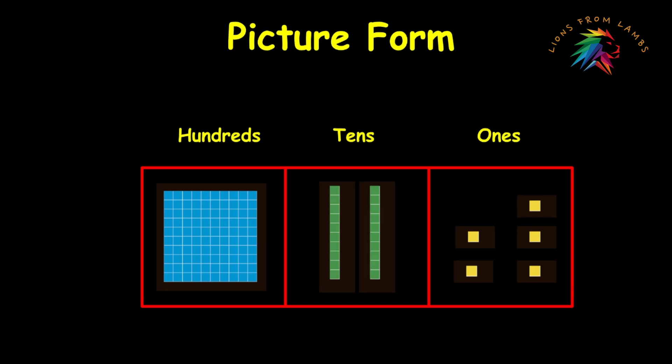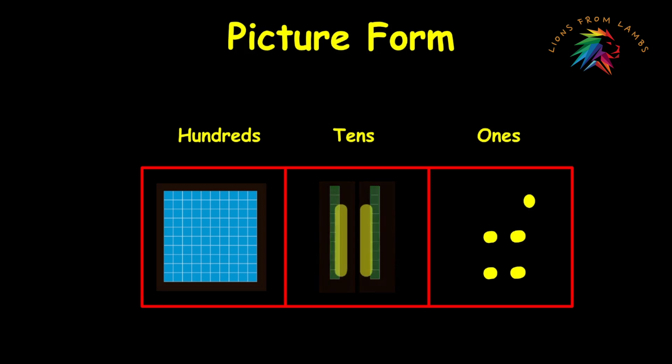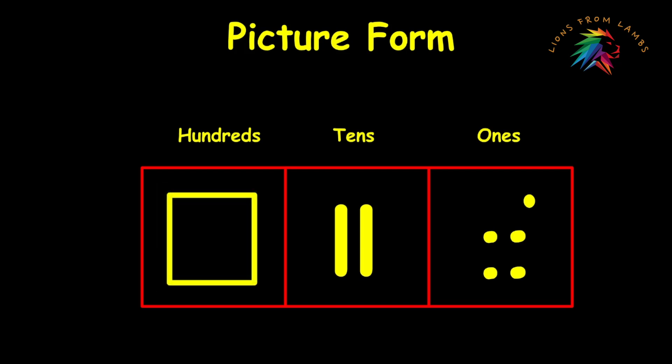Now, if we're using picture math here, we don't have the blocks. Instead of the blocks, we're going to simply pencil in five dots in the ones place. And instead of the two rods that are in the tens place, we're simply going to draw in two short lines of the same length. And then in the hundreds place, instead of the flat, we'll draw our simple square.